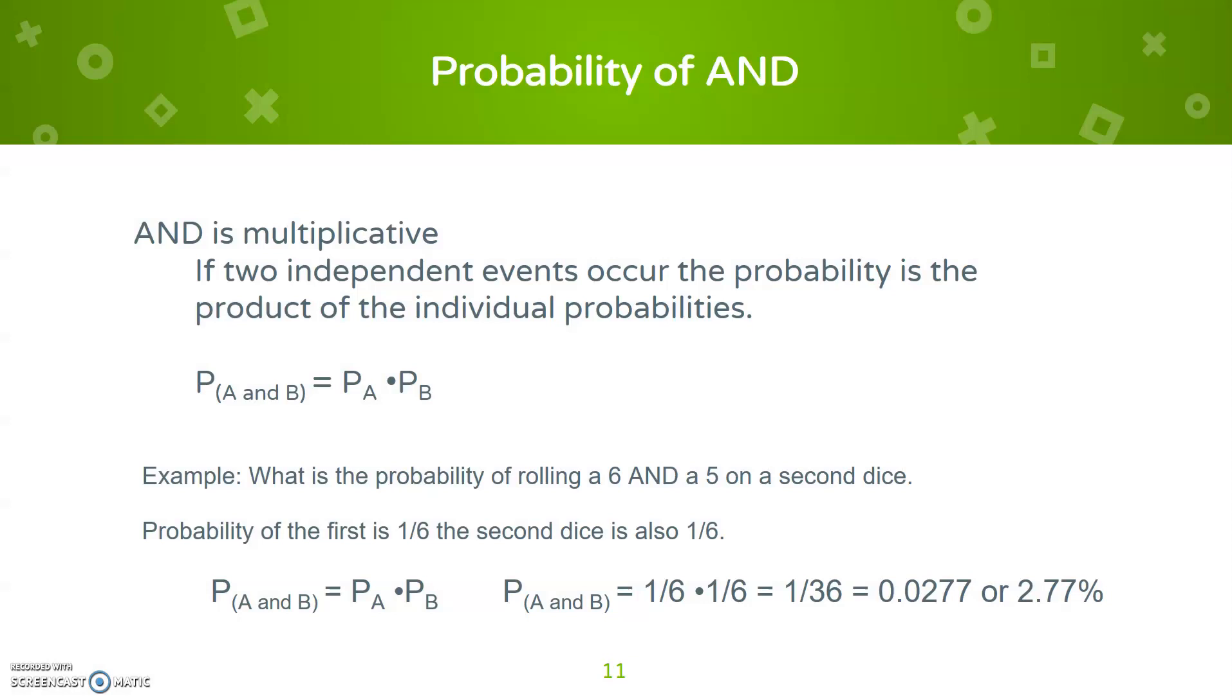In mathematics, the words and and or actually have a mathematical function. And is multiplicative, meaning that you multiply the two probabilities. So what's the probability of A and B happening? Well, then you take the probability of A multiply it with the probability of B. For example, what's the probability of rolling a six and a five on a second dice?